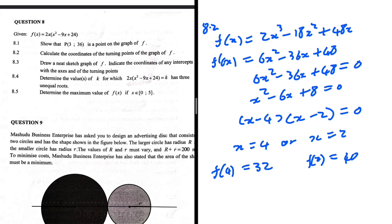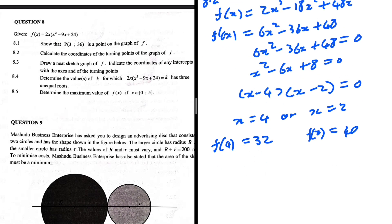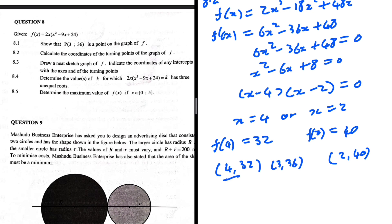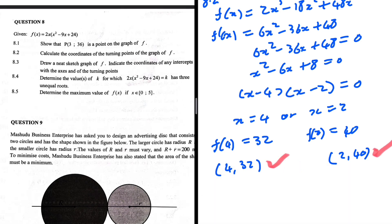So the turning point coordinates are (4, 32) and (2, 40). As a sanity check, from 8.1 we know P(3, 36) is on the graph — and since 3 lies between 2 and 4, the y-values 40, 36, 32 follow a decreasing pattern, which makes sense and confirms our answers.